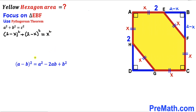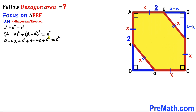Recalling the identity (A minus B)² = A² minus 2AB plus B², we expand both binomials: (4 minus 4X plus X²) plus (4 minus 4X plus X²) equals X². We can see the X² terms cancel, and combining like terms on the left gives us X² minus 8X plus 8 equals 0.